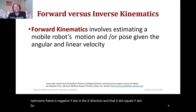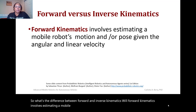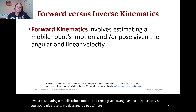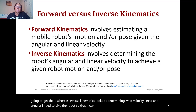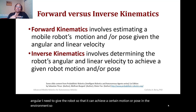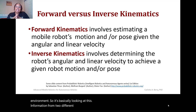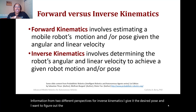What's the difference between forward and inverse kinematics? Forward kinematics involves estimating a mobile robot's motion and/or pose given its angular and linear velocity — you give certain values and estimate where the robot is going to go. Inverse kinematics determines what linear and angular velocity I need to give the robot so it can achieve a certain motion or pose. For inverse kinematics, I give it the desired pose and figure out the velocities. For forward kinematics, I am given the velocities and figure out what pose it ends up at.